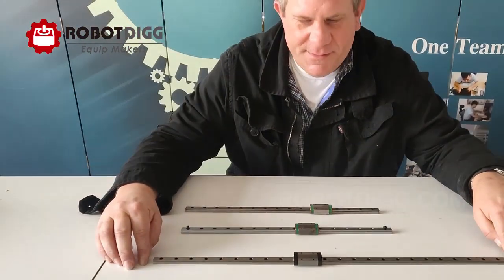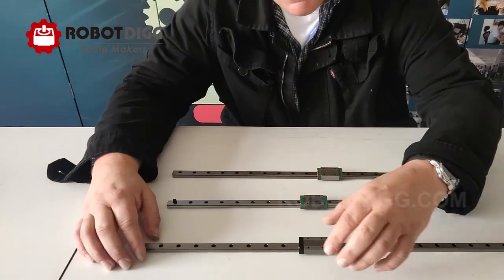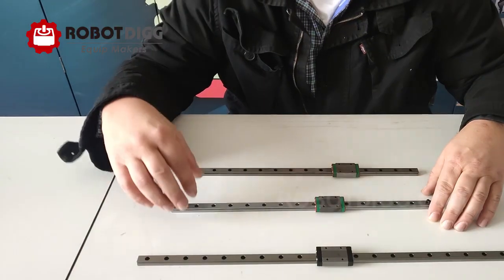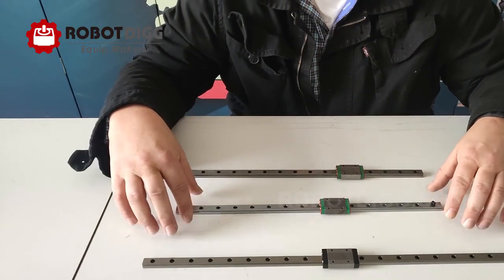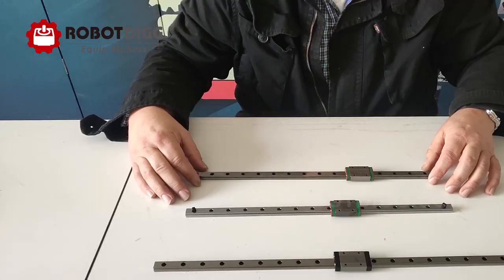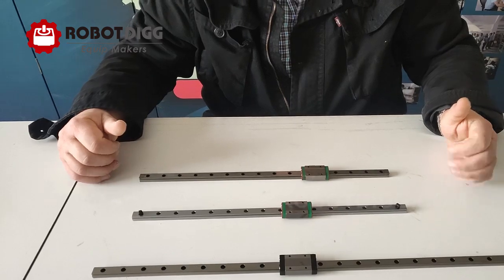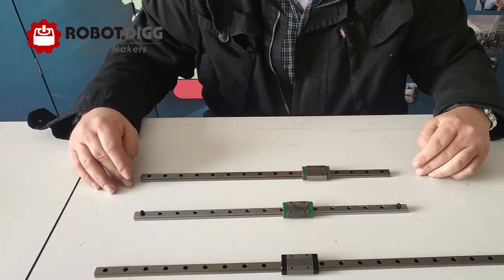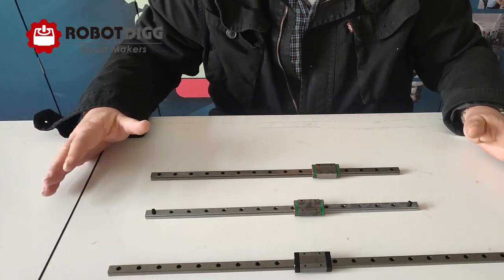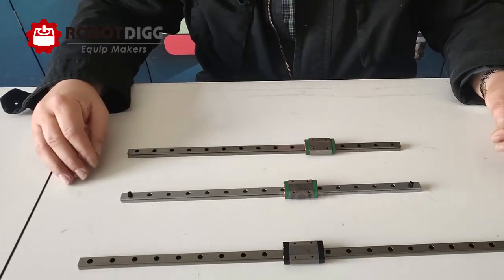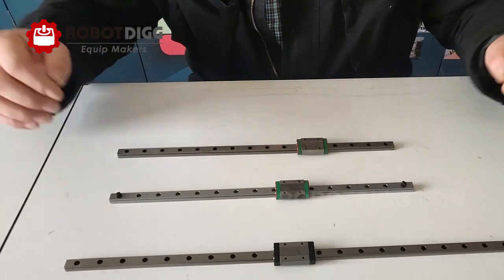Hey hello everyone, we're here at RobotDig. Today we're going to look at some linear rails. First we have a 440 stainless steel, that's a RobotDig product. Second, we have a Taiwanese 55 steel. And third, this is a Chinese hardened steel. These rails have been sitting in a warehouse environment for a little over a year. We're going to see how they work.